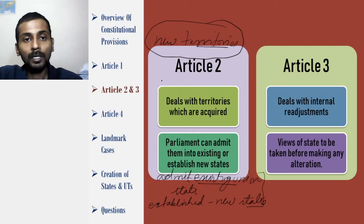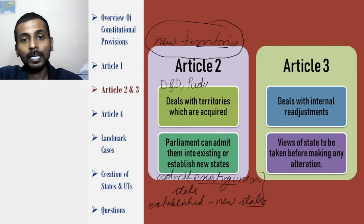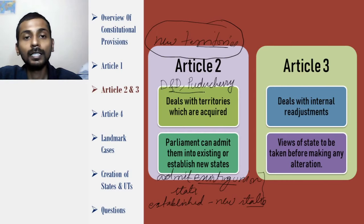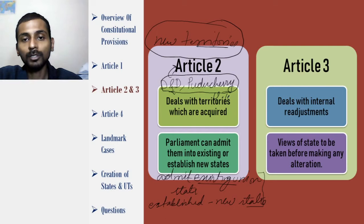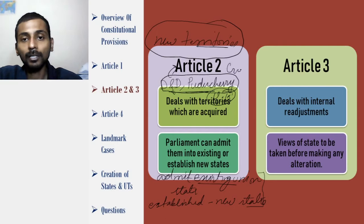So when Portugal finally gave us Daman and Diu, or when the French gave us control over Puducherry, they were added to India via Article 2. They were made a union territory at first, and then later Goa, which was a union territory, was turned into a state. All these were added to India via Article 2.